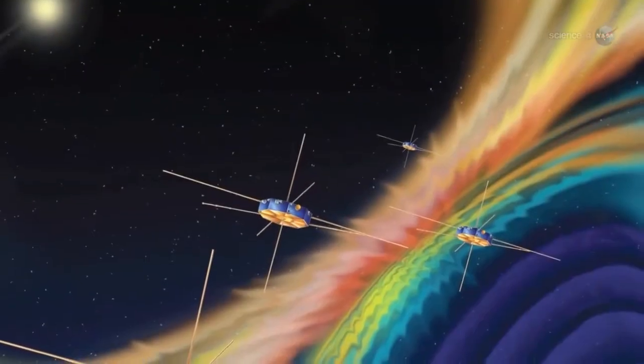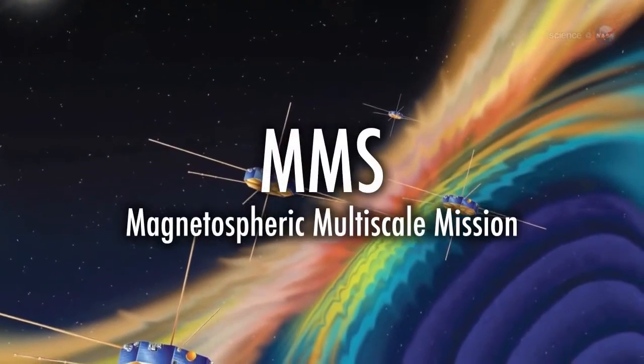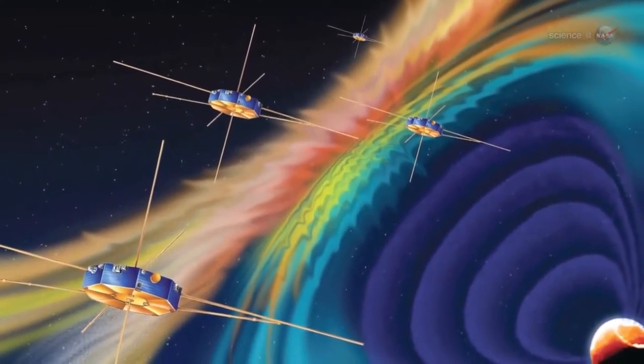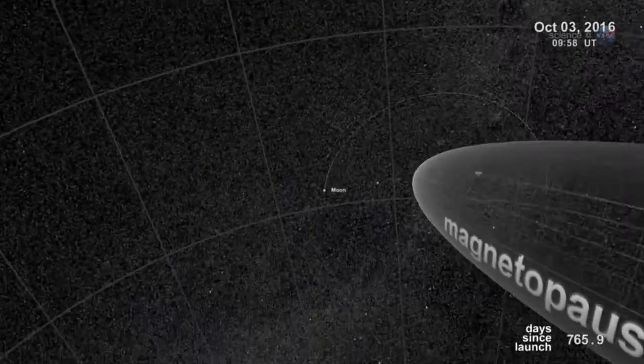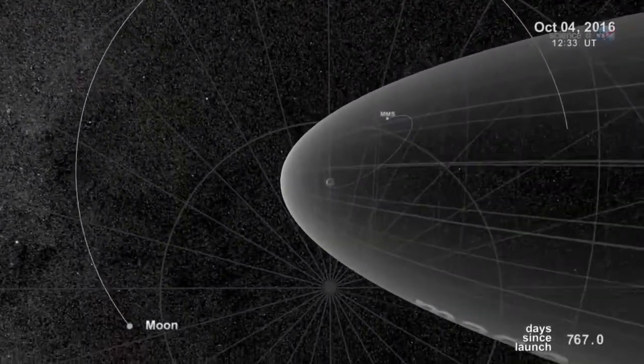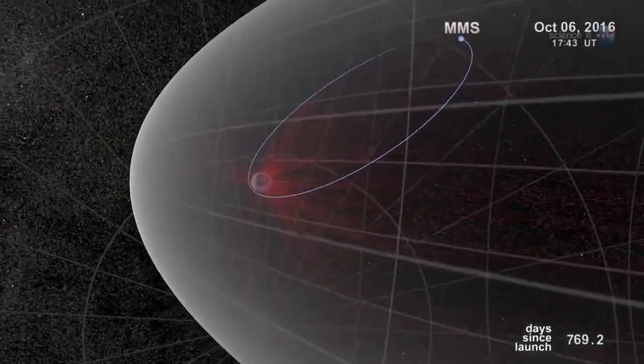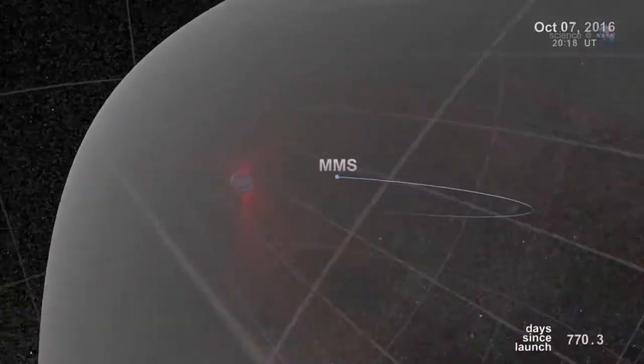NASA is planning a mission called MMS, short for Magnetospheric Multiscale Mission, due to launch in 2014 to study the phenomenon. Bristling with energetic particle detectors and magnetic sensors, the four spacecraft of MMS will spread out in Earth's magnetosphere and surround the portals to observe how they work.